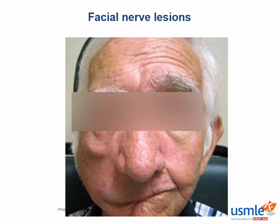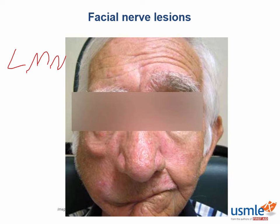Would you judge this to be an upper motor neuron or a lower motor neuron facial lesion? This is a lower motor neuron lesion. In fact, this is Bell's palsy. You can see that this is a lesion affecting both the upper and lower face on the patient's right side.